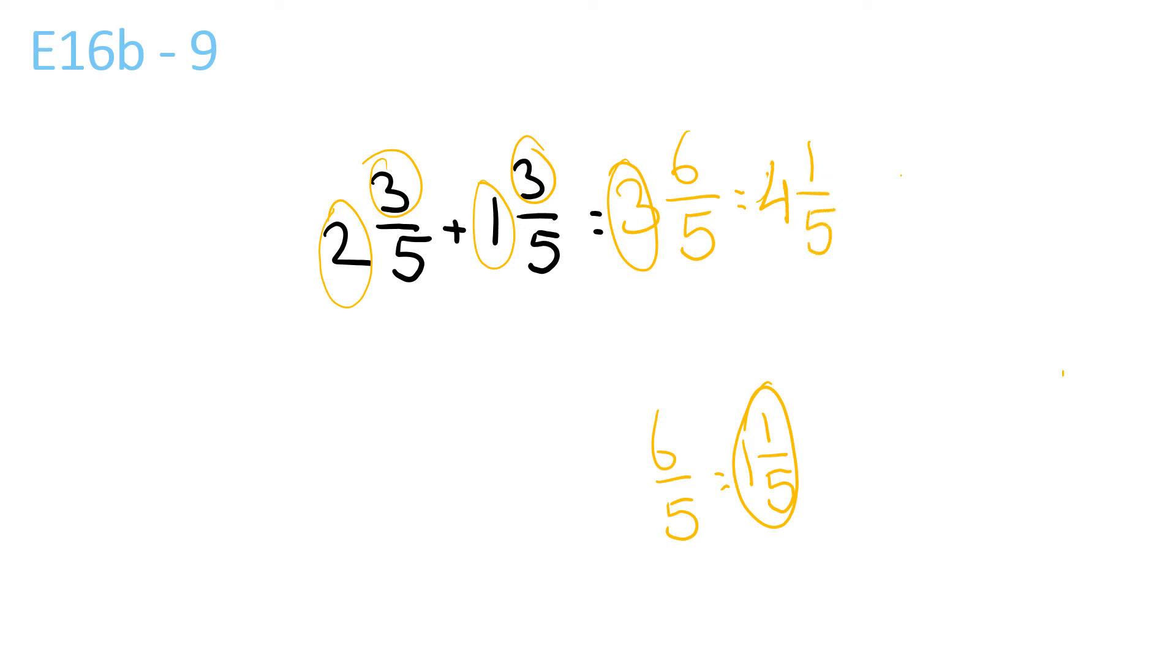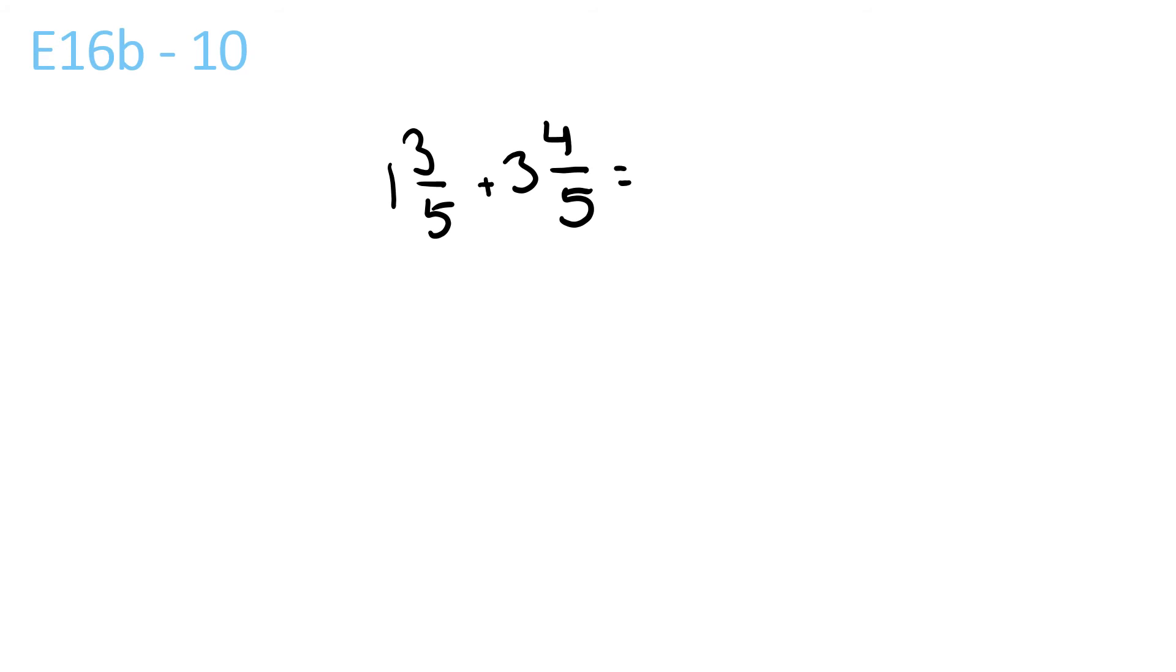This is E16B, Question 9. And I have 1 plus 3, 4, 4 plus 3, 7 over 5, equals 7 over 5, which is the same as 1 and 2 over 5. So you have 1 and 2 over 5, plus 4. So it's 5 and 2 over 5.